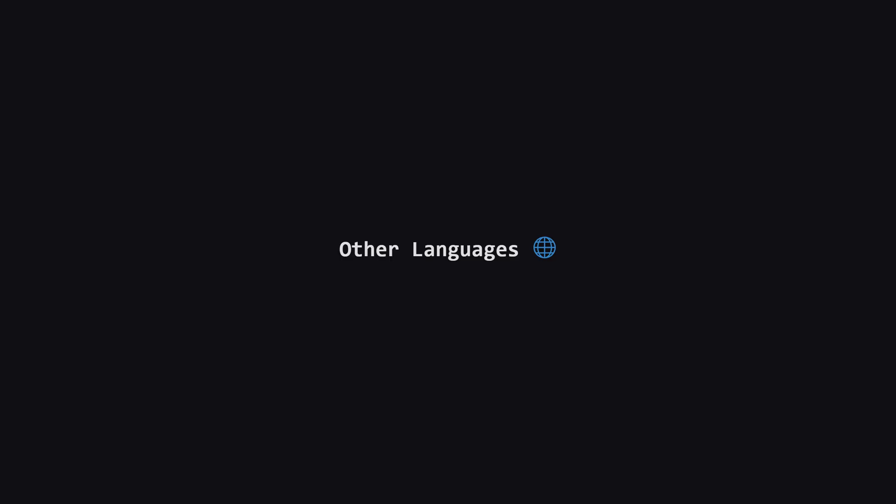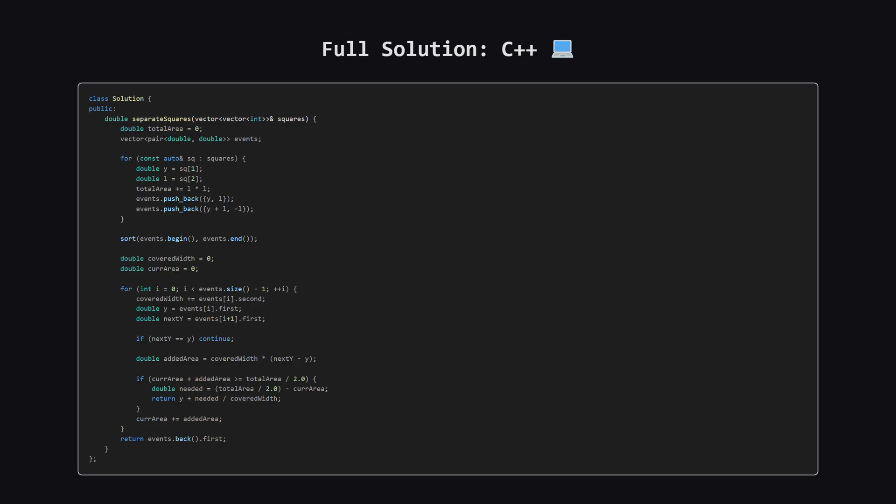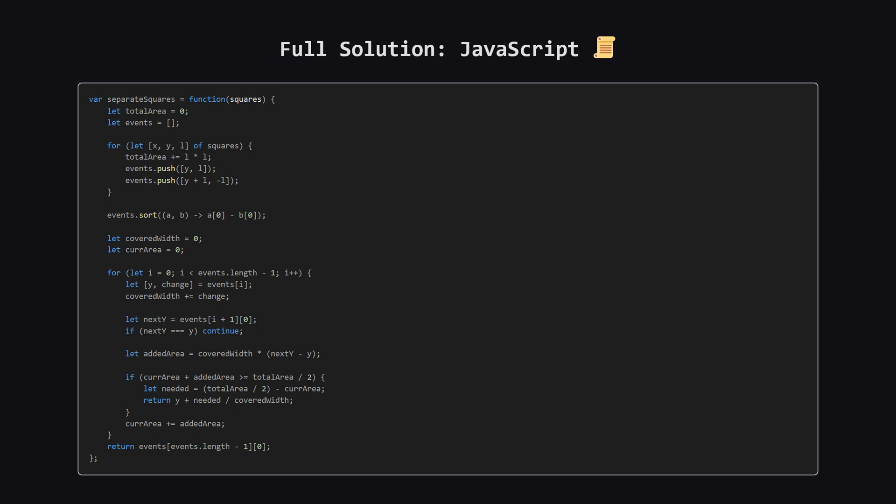That covers the main solution in Python. As promised, for those of you who code in other languages, I'm about to show the full solutions for Java, C++, and JavaScript. I won't be breaking these down, so just pause the video on your language of choice to check it out. Here is the full solution in Java using the sweep line approach — pause the video here to take a closer look. Next up, here is the C++ version, and finally, here is the solution in JavaScript.